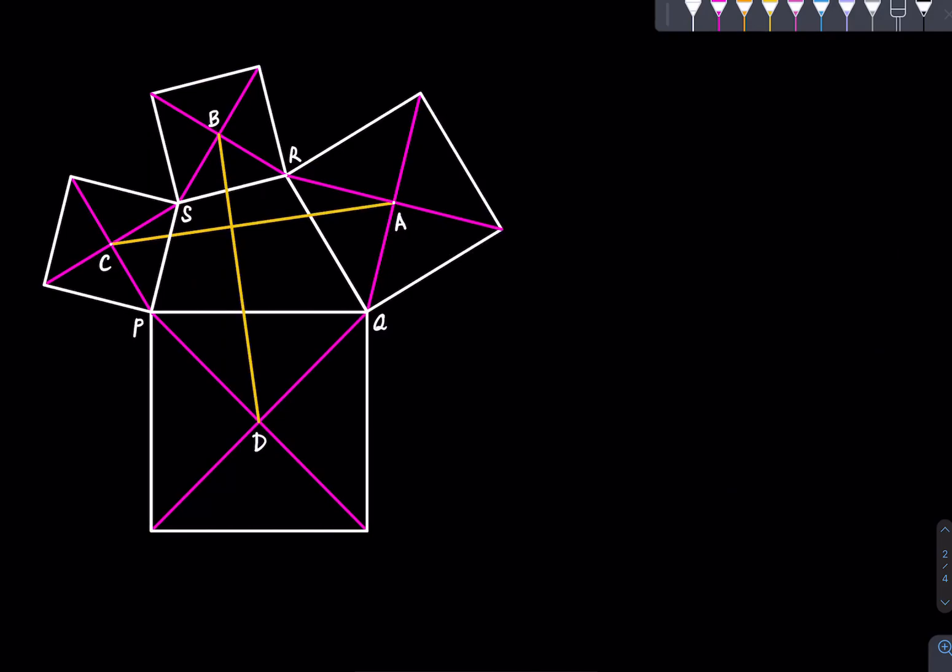So we will think of P, Q, R, S, A, B, C and D as complex numbers. These are complex numbers now, and what we will need to do is express these centers of the squares in terms of these complex numbers P, Q, R and S, and then we will proceed from there.